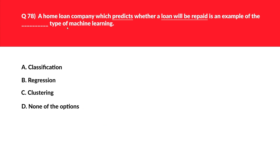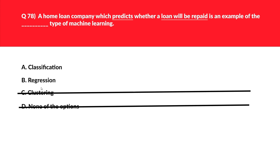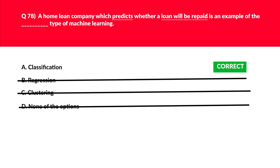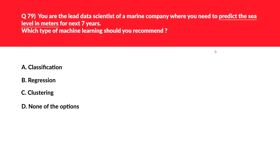This question is about predicting whether a home loan will be repaid. The keyword 'predicting' tells us C (clustering) and D (none of the above) are out. The question looks for a yes-or-no value — will the loan be repaid or not? Since we need to categorize, classification applies. If it asked for a numerical amount, regression would be the answer. So classification is correct.